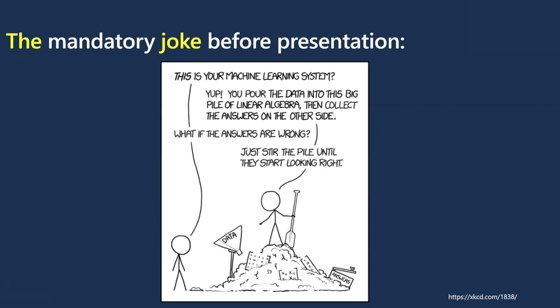Person A asks: what if the answer is wrong? Person B says: simple, you just pour the pile and start looking for more answers. This is an insider joke in the data science community — a lot of data scientists, if they don't get the right answer, start looking for more answers because they want to show something to impress their boss. That's not entirely right, and that's what this joke is about.